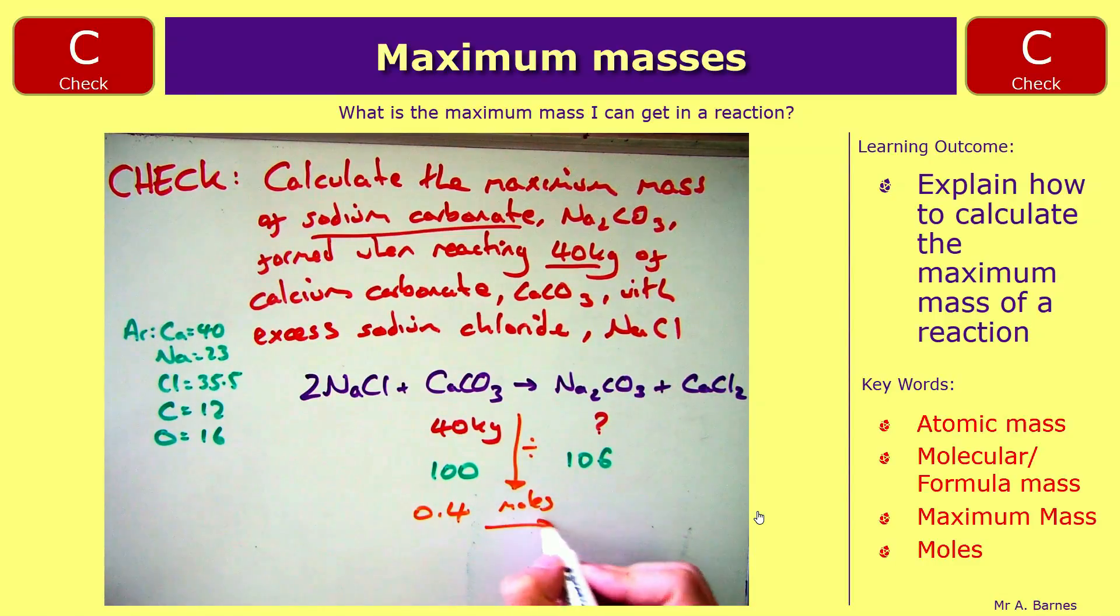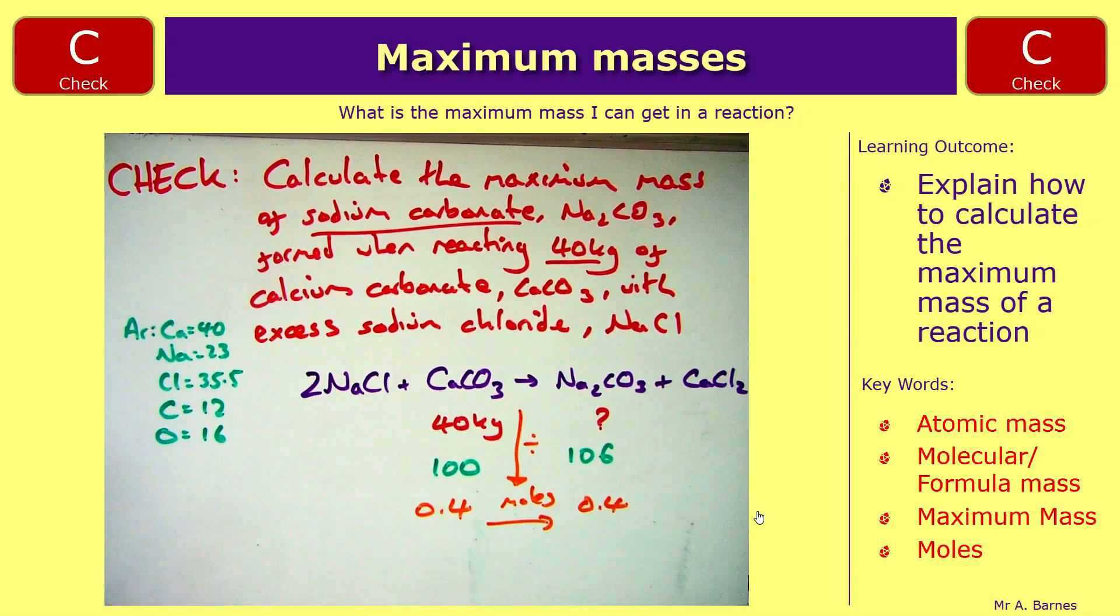That is the same all the way across. So I have 0.4 moles of sodium carbonate. So then all I need to do is multiply up, so 0.4 times by 106, and that gives me 42.4 kilograms, which gives me my three marks.